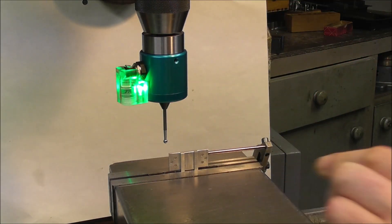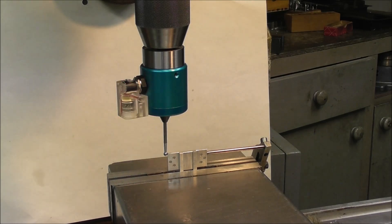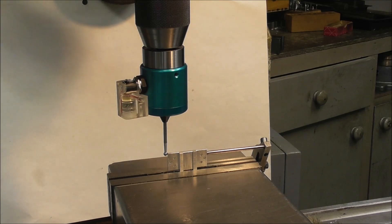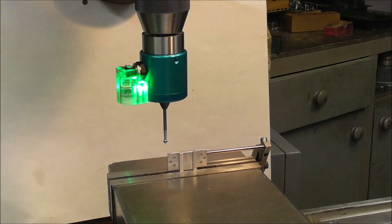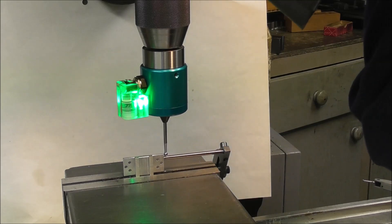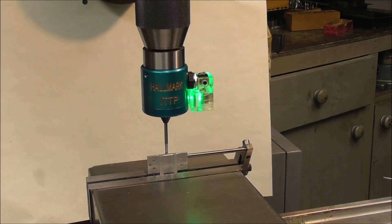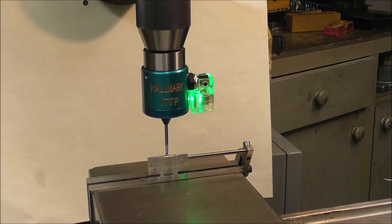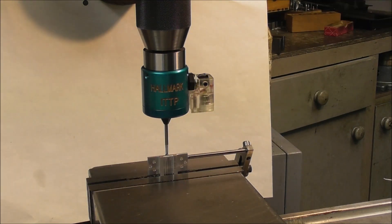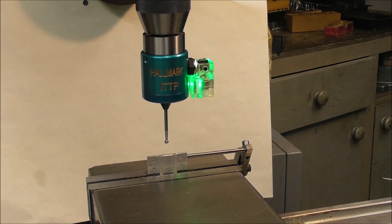Now we can set up our part work offsets very quickly and easily using the digital readout in manual mode. Touch one side, index over, touch the other side, split the difference, and we have the center in the X. For example, in this case I want to set up the Y based off a surface or an edge, so I just come into contact, enter zero on the DRO, and then index in the radius of the stylus tip, two millimeters. Now I'm on Y0.